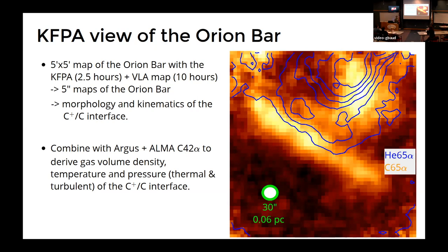And the idea is that then with both sets of observations, we can get roughly 5 arc second resolution. And combining these two lines at 3 millimeters and K band, we can then get maps of density of the Orion Bar.